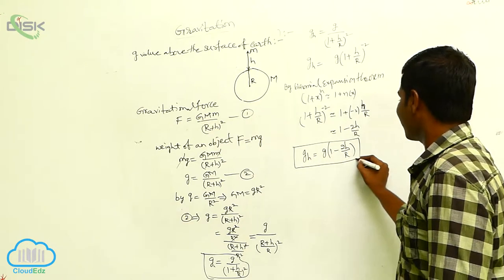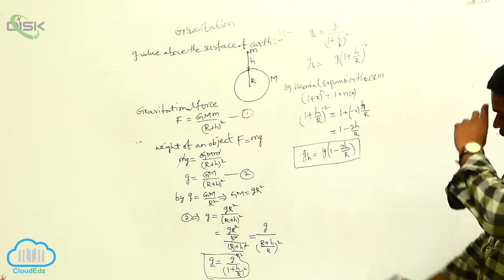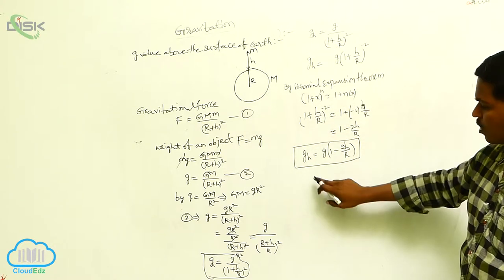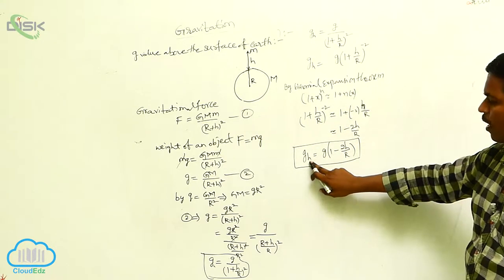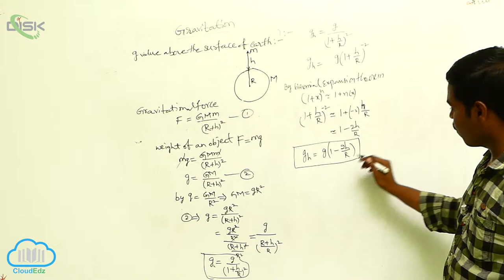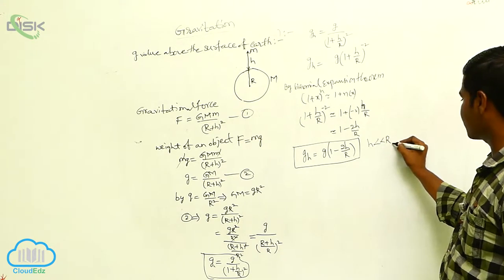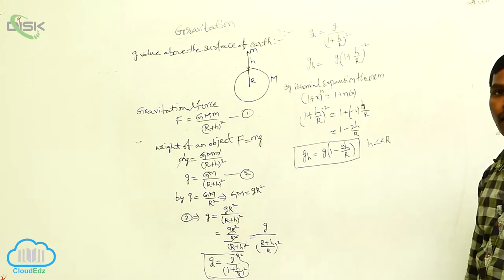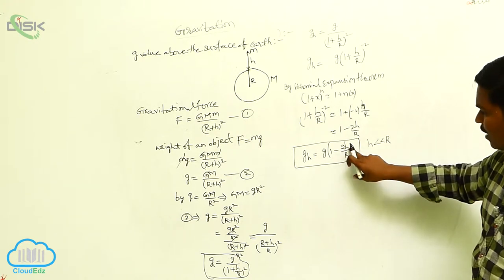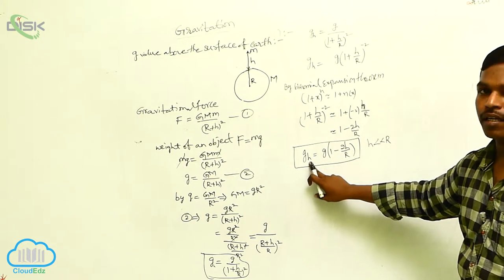This is the acceleration due to gravity above the surface of the earth, where h is very small compared to the radius of the earth. As the height increases, the acceleration due to gravity decreases.